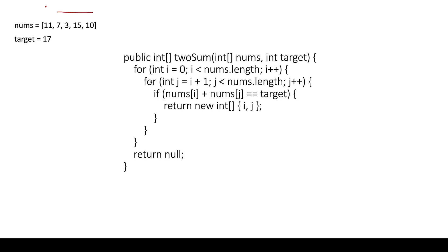Once the inner loop for j is done, we increment i and j moves from the new position forward — considering pairs like 7,3 then 7,15 then 7,10, and so on for all pairs. This algorithm is correct and will give the right solution, but it might cause a TLE. So let us move to the hash map approach.